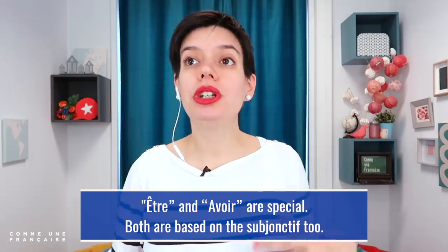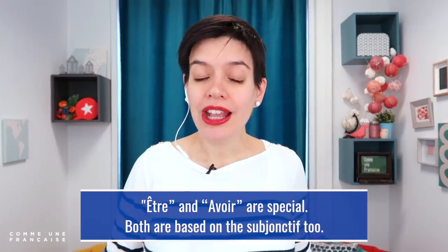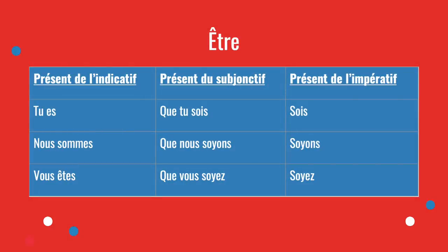For intermediate and advanced learners, être and avoir are special — both are based on le subjonctif. In le présent de l'indicatif: tu es, nous sommes, vous êtes. In le subjonctif: que tu sois, que nous soyons, que vous soyez. In l'impératif, you remove the que: sois, soyons, soyez. It's easy if you already know the subjunctive; otherwise it's almost impossible to guess.